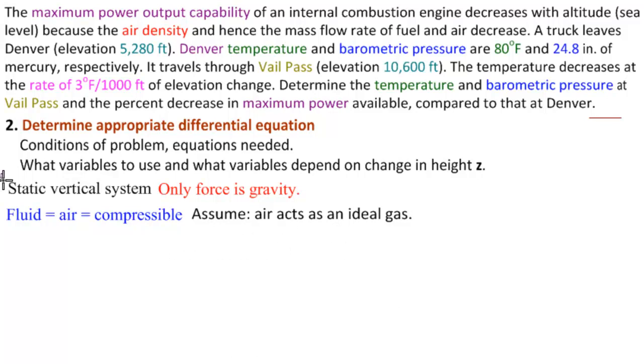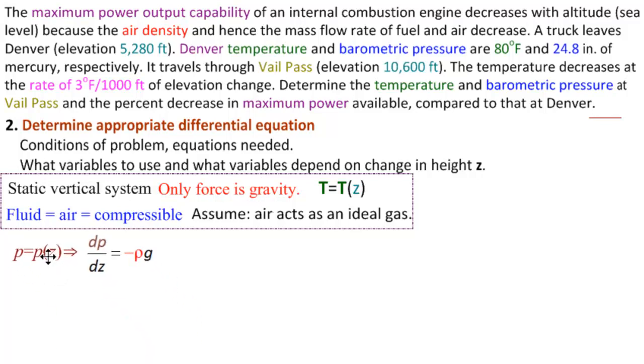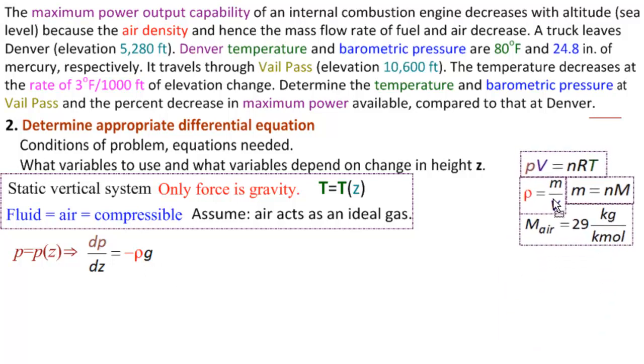So we have the assumptions that we've had for the last two problems. And we have one more vital thing, and that is that t is a function of z. So static vertical system only forces gravity means that p is only a function of z, not of x and y. And we know then that we have dp/dz equals minus rho g.